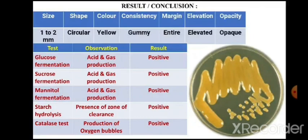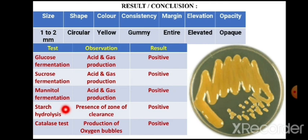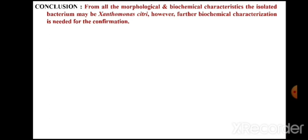These are the results of biochemical characterization. Glucose fermentation test: presence of acid and gas — positive. For sucrose: positive. For mannitol: positive. Starch hydrolysis: presence of zone of clearance after the addition of iodine — positive. Catalase test: positive.